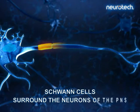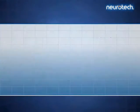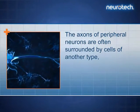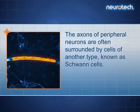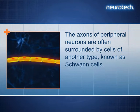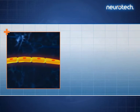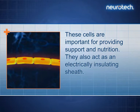Schwann cells surround the neurons of the PNS. The axons of peripheral neurons are often surrounded by cells of another type, known as Schwann cells. These cells are important for providing support and nutrition. They also act as an electrically insulating sheath.